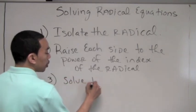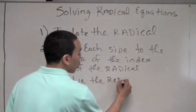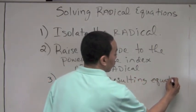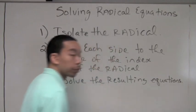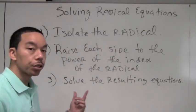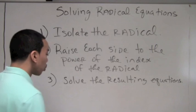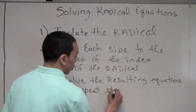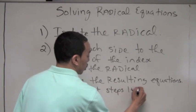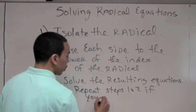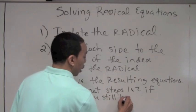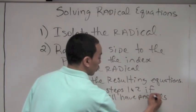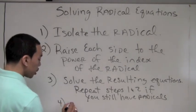The next step is to solve the resulting equation. However, if you still have a radical, repeat steps one and two — isolate the radical again and raise both sides to the appropriate power. Step four is to check your solution.